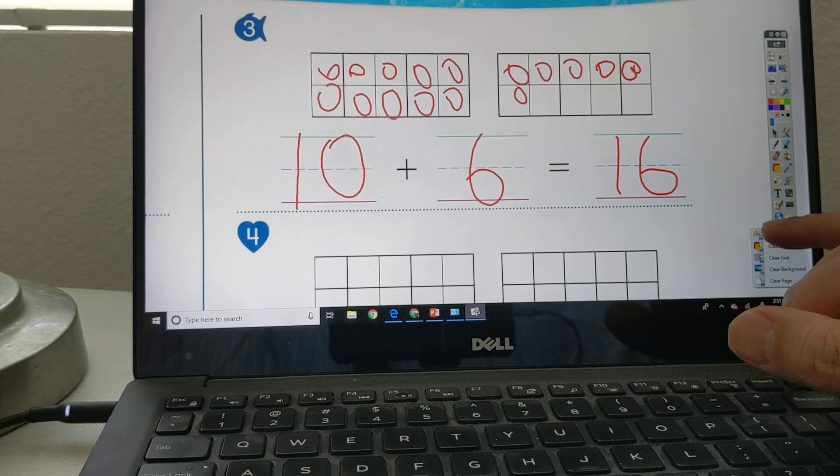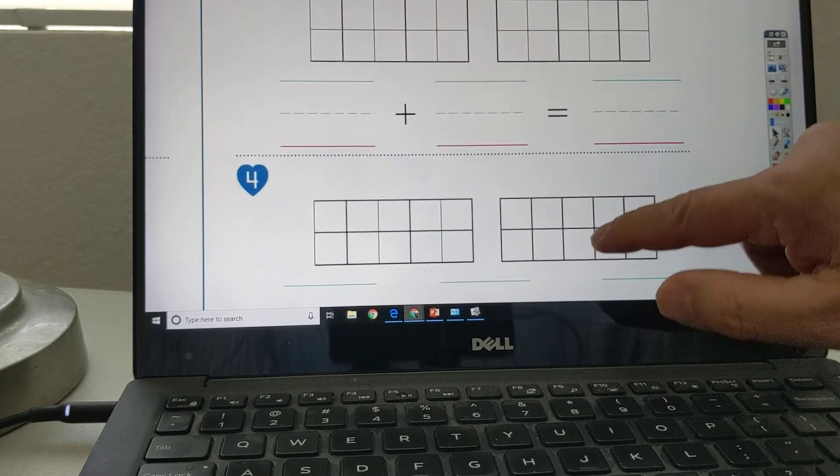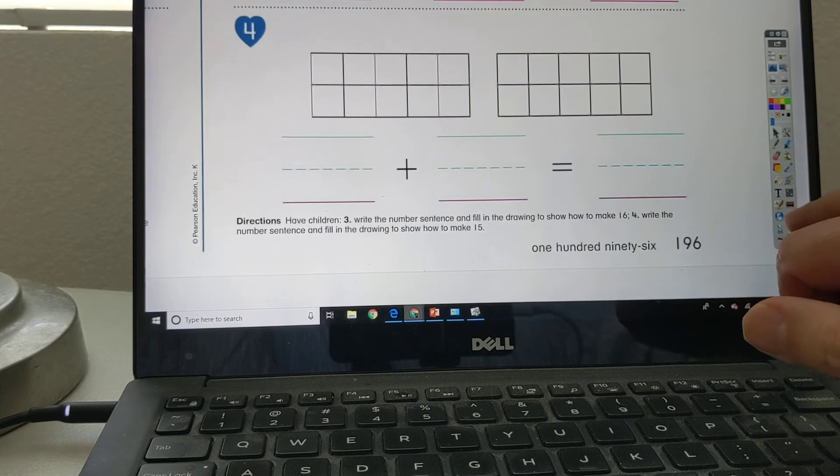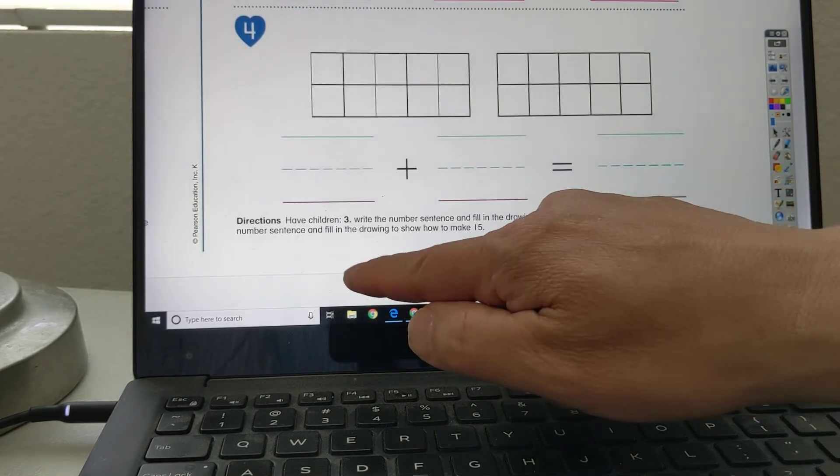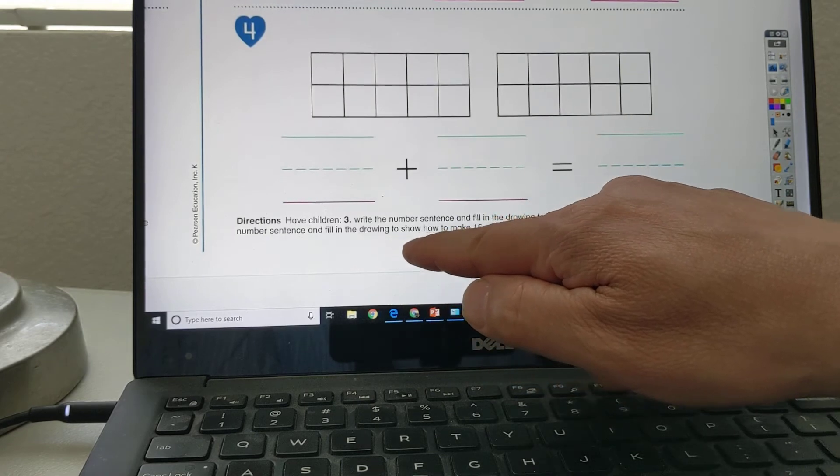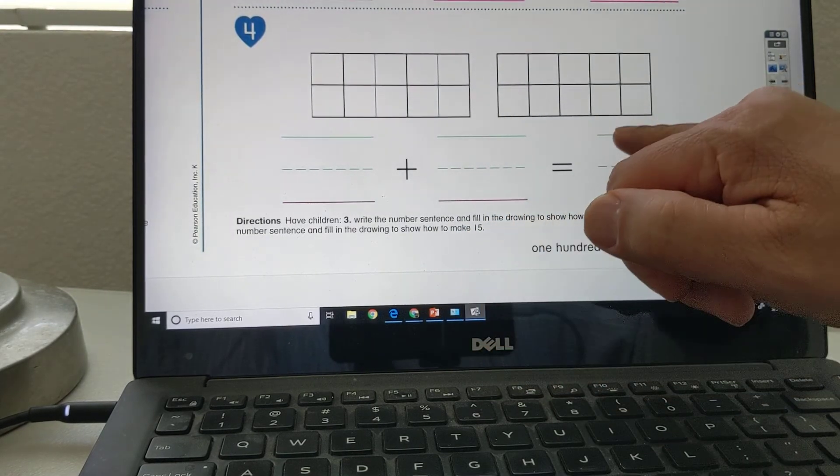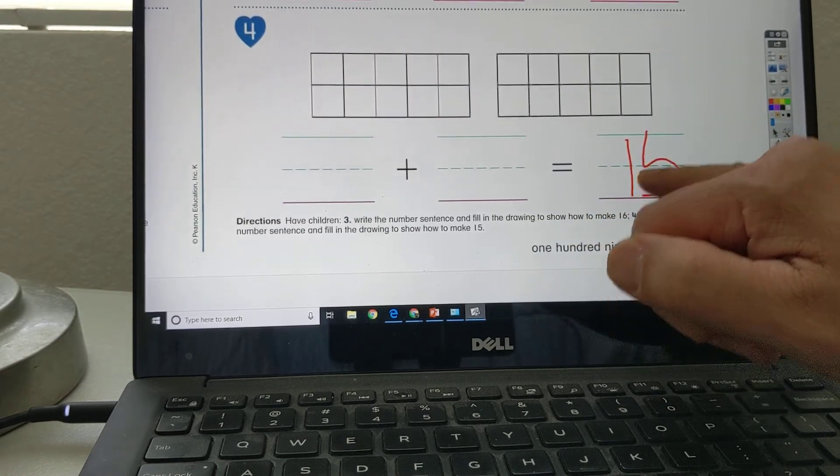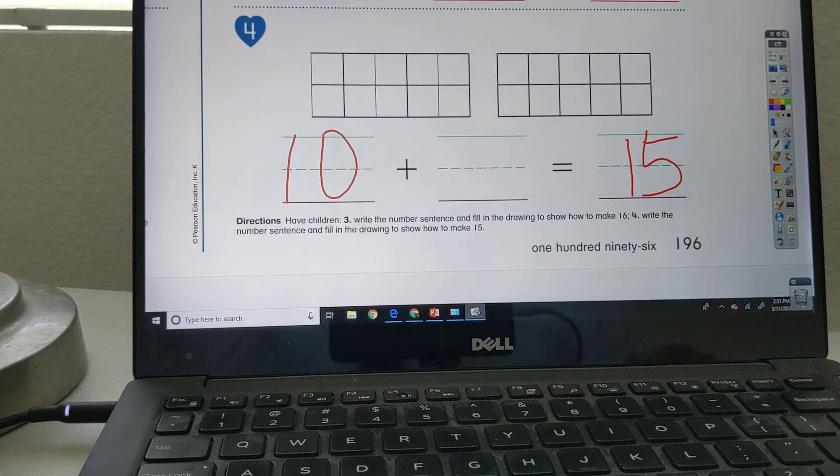Now to number 4. Let's come down to number 4. Write the number sentence and fill in the drawing to show how to make 15. So 15 is, 10 is here. 10 plus what is 15.